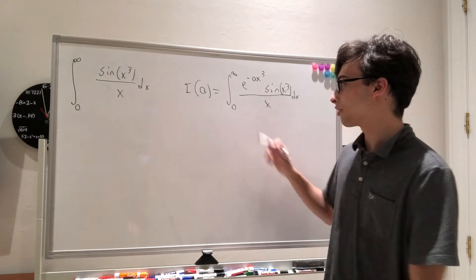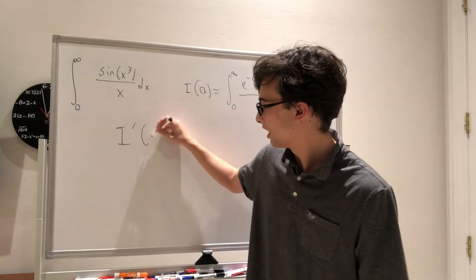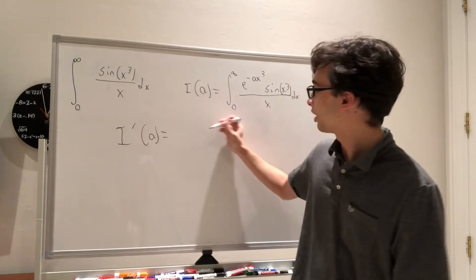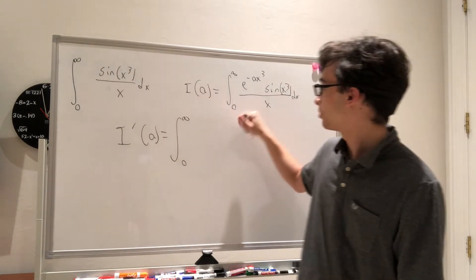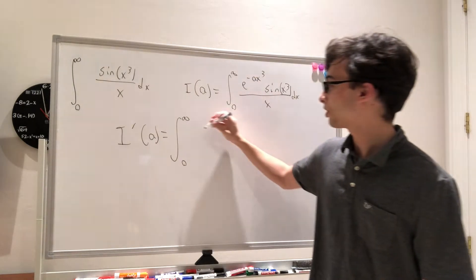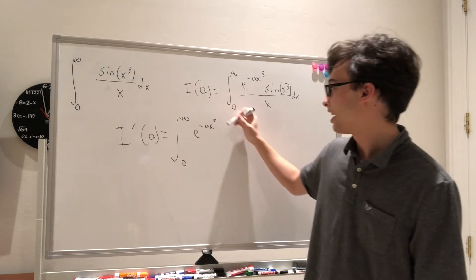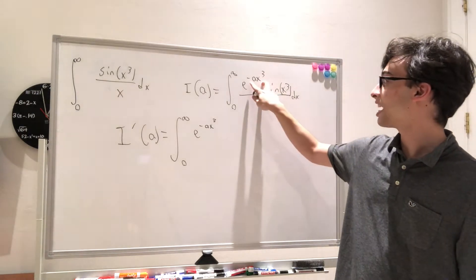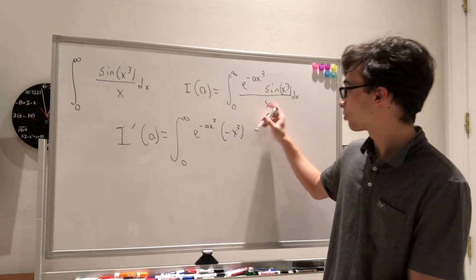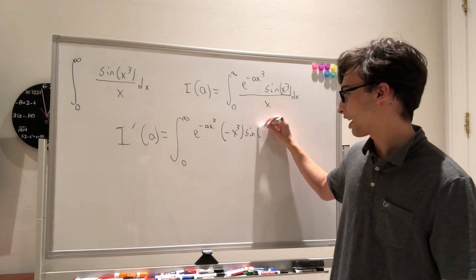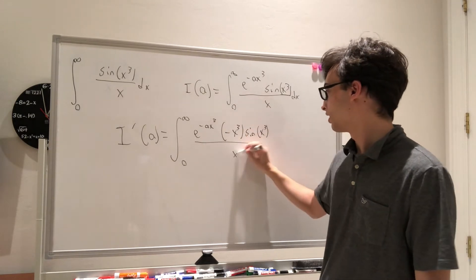So now let's proceed to take the derivative. I prime of a is going to equal — we still have the integral from 0 to infinity. Taking the derivative with respect to a, the exponent stays, so we have e to the negative a x cubed, and with respect to a we'll have a negative x cubed. Then everything else stays the same — we still have sine of x cubed over x dx.